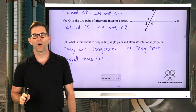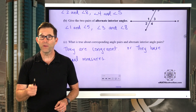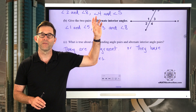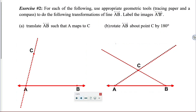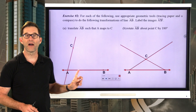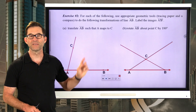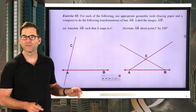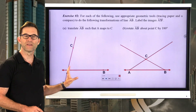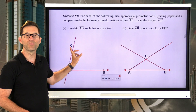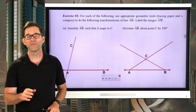Now, all of that we saw in our last unit. But what we want to do in this lesson is see how we can justify these two things using rigid motions. Exercise number two: for each of the following, use appropriate geometric tools — tracing paper and a compass — to do transformations of line AB and label the images A prime, B prime. Letter A asks us to translate line AB such that A maps to C. Lay your tracing paper right on top of the diagram, trace the entire diagram, then slide it up so that point A maps to point C and redraw what you see.